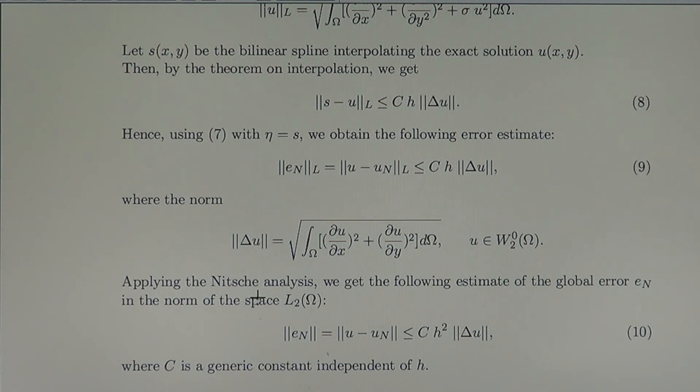But applying the Nitsche analysis, as we did before for one variable, we get the following estimate of the global error in the norm of the L-2 space. So by Nitsche procedure, Nitsche analysis, we come from the norm L to the norm L-2, without the first derivative, only the error alone, but we have here H-square.